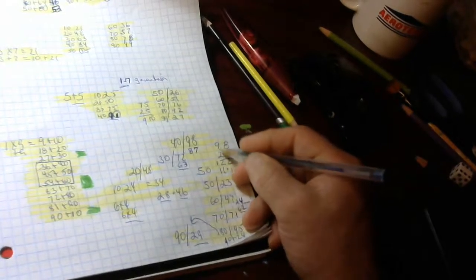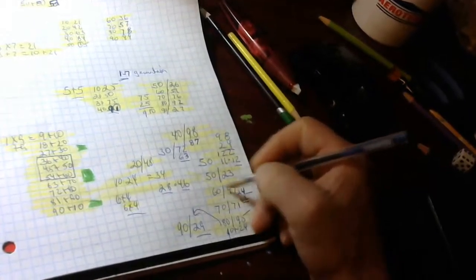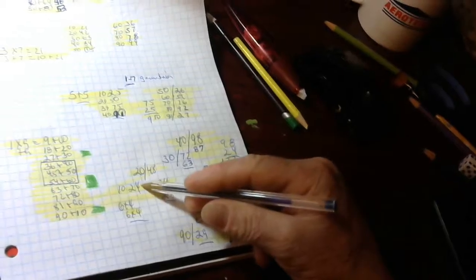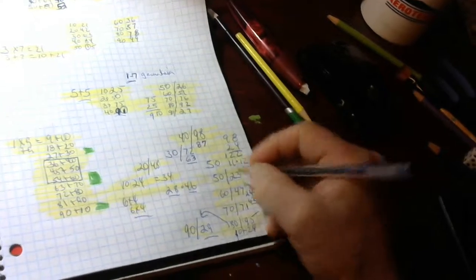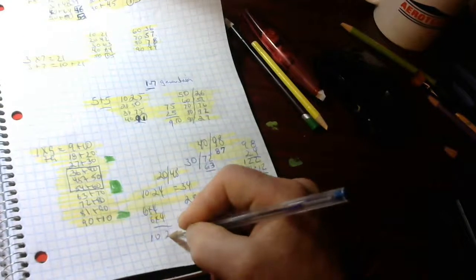This number over here, 98. 98. Let's not go there. Let's go to 60. 6 times 4 is 24. Equals to 6. 10, 24.